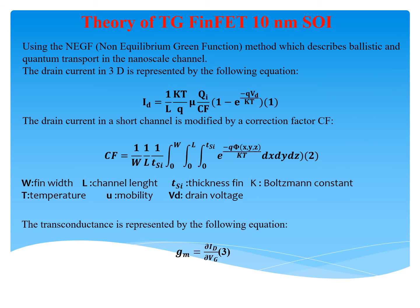The theory of the Trigate N-FinFET 10 nm SOI uses the NEGF (Non-Equilibrium Green's Function) method, which describes ballistic and quantum transport in the nanoscale channel. The drain current in 3D is represented by the following equation, where L is the channel length, K is the Boltzmann constant, T is the temperature, Q is the electron charge, mu is the mobility, QA is the charge in the channel, CF is the correction factor, and VD is the drain-source voltage. The drain current in the short channel is modified by the correction factor, where W is the fin width, L is the channel length, and TSA is the fin thickness.